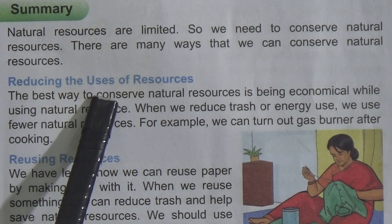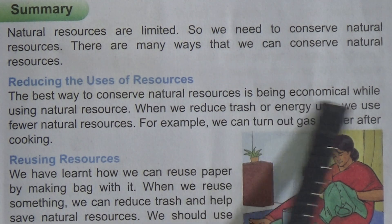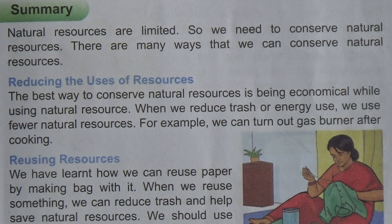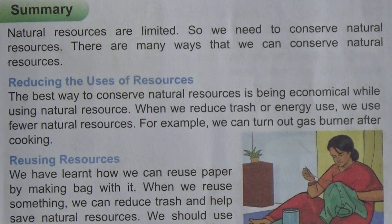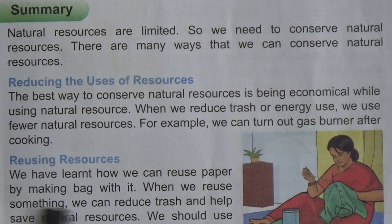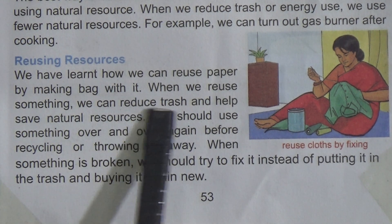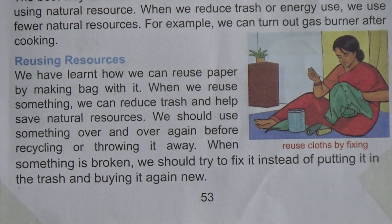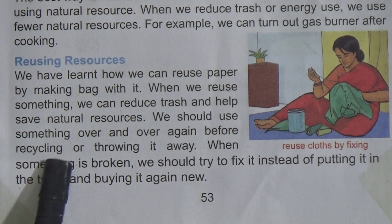Reducing the use of resources: the best way to conserve natural resources is being economical while using them. When we reduce trash or energy use, we use fewer natural resources. For example, we can turn off the gas burner after cooking. When we reuse something, we can reduce trash and help save natural resources. We should use something over and over again before recycling or throwing it away.